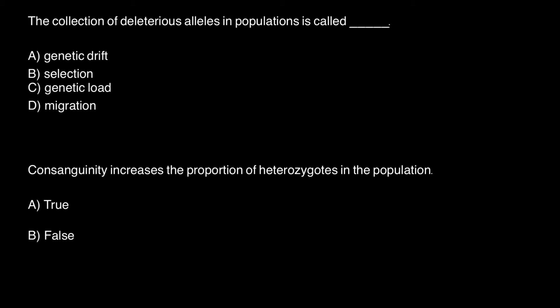The first question is: the collection of deleterious alleles in a population is called, and you have to choose one of these answers.